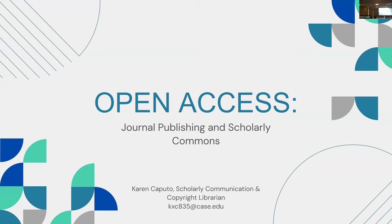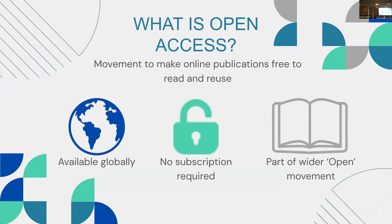We're going to talk about all things open access, especially around journal publishing and our institutional repository, Scholarly Commons. We'll start at the very beginning: what is open access? Many of you probably already know it's a movement to make online publications freely available to read and reuse. We can talk about journal articles, book chapters, or books. It's an easy way to share work globally — anyone with an internet connection can access it with no financial barriers or subscription required.